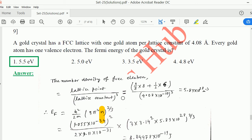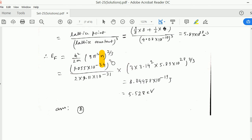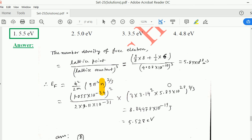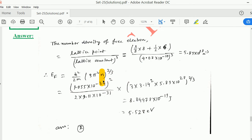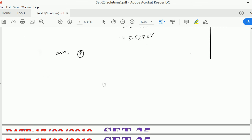We have to find the number density of free electrons, which equals lattice points per unit cell divided by lattice constant cubed. In case of FCC, the corner atoms are shared by eight atoms (1/8 times 8), and the atoms on the face are shared by six atoms with contribution 1/2 (1/2 times 6). So 1/2 times 6 plus 1/8 times 8 is the number of lattice points. The lattice constant is 4.08 angstroms cubed. We're getting 5.89 times 10 to the 28 per meter cubed. Replacing the values, we get the Fermi energy to be 5.528 electron volts, matching with option 1.